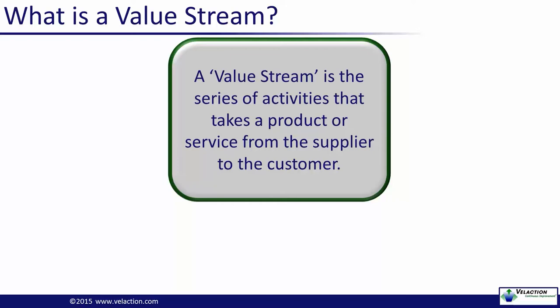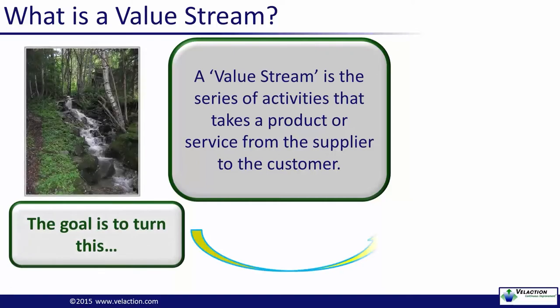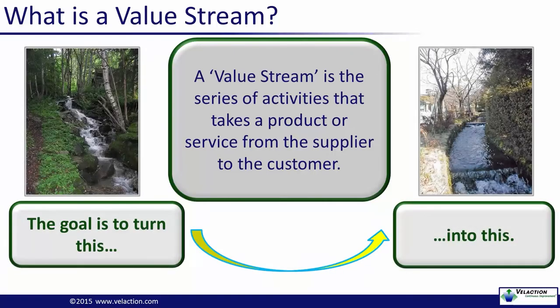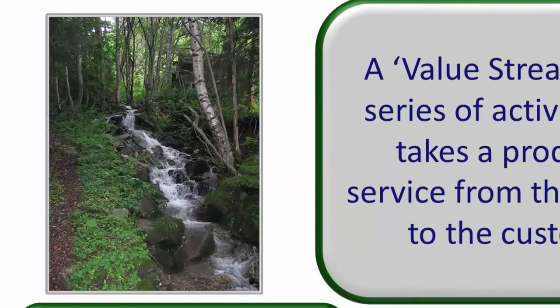Some definitions of value stream include the information flow as part of the value. I tend to believe that the information, unless it is actually the output of the process, is not part of the value — rather, it just enables the value. For most businesses that have not yet started aggressively applying continuous improvement to their processes, the flow of value is rather impeded. You can think of it as a meandering stream — there are lots of pools and backwaters and rocks and sticks blocking the flow, making it far less efficient than it could be.